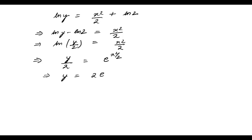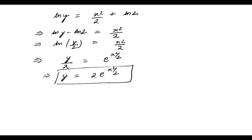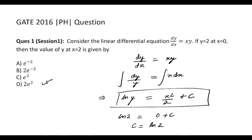Now in the question they have asked the value of y at x = 2, so it's 2e². The right answer is option D. It was a straightforward question, so the answer is 2e². Thank you for watching this video.